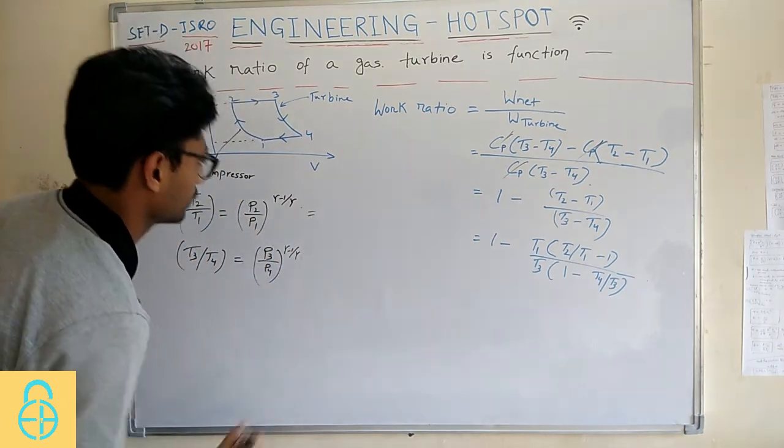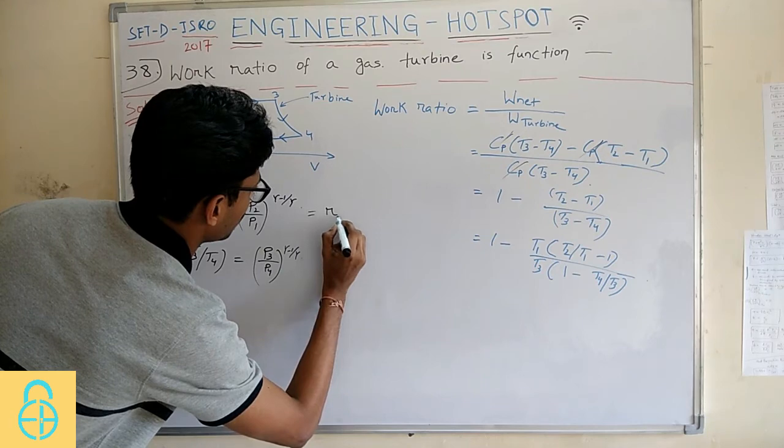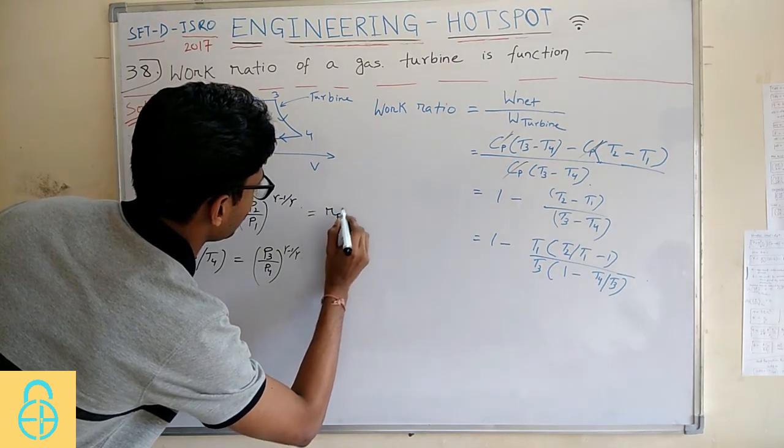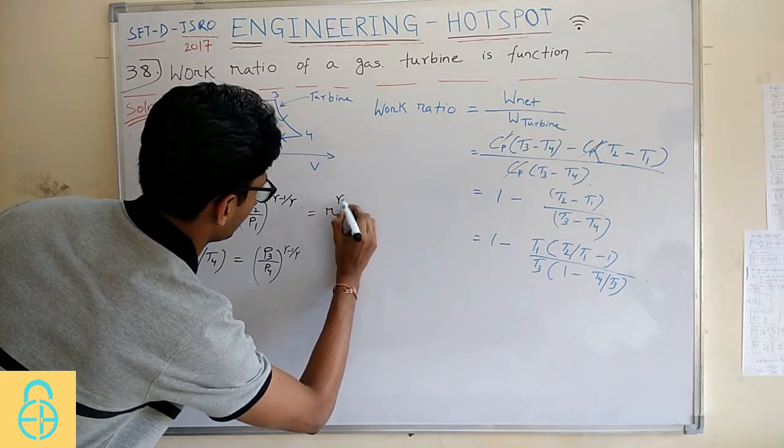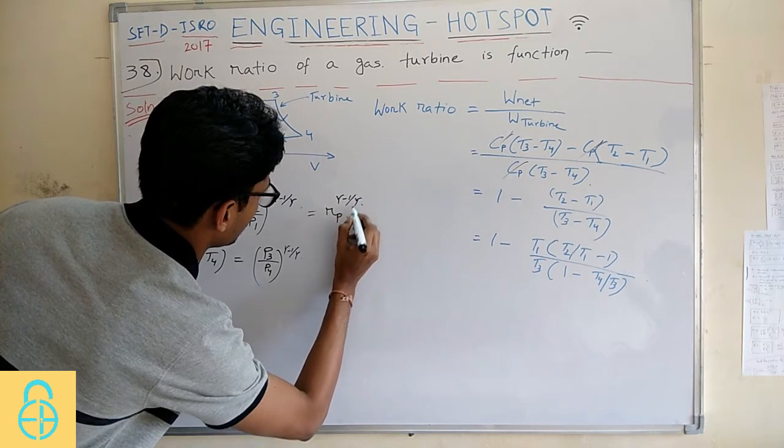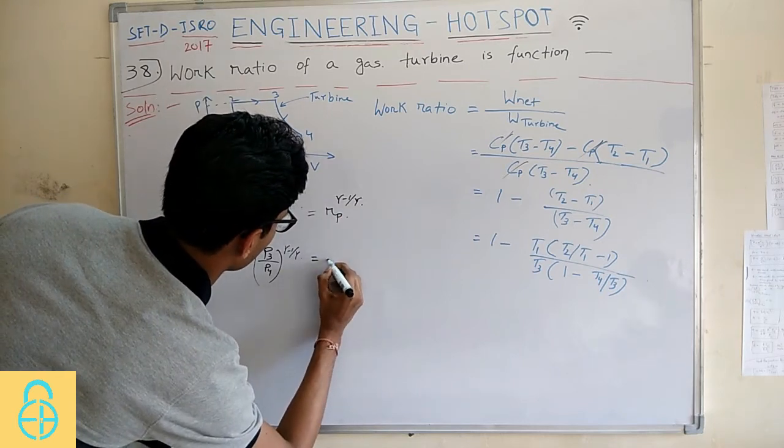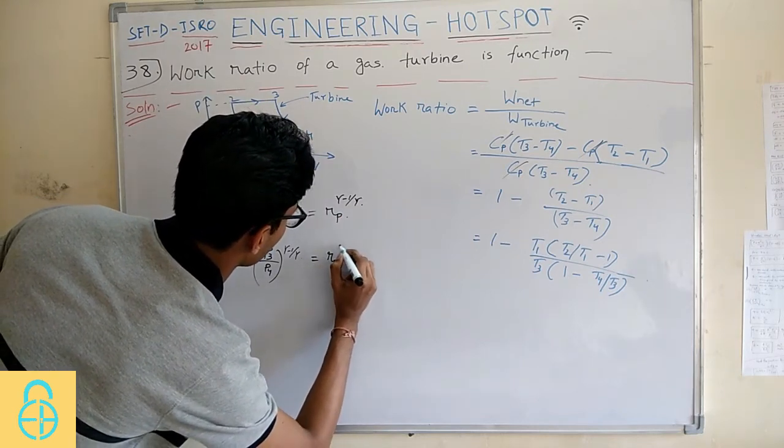Instead of writing P2 by P1 I can replace with one term that is called pressure ratio Rp and here also it can be replaced by pressure ratio Rp.